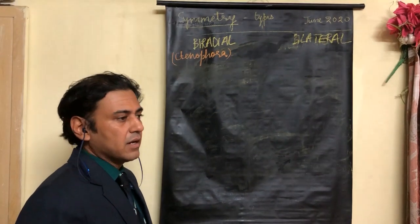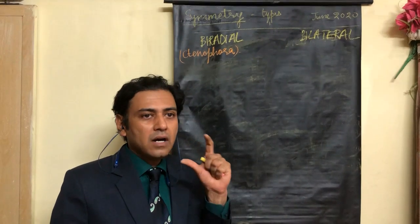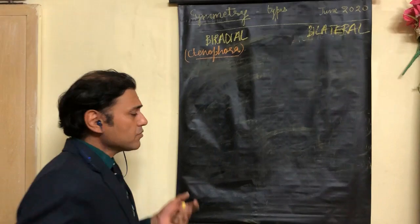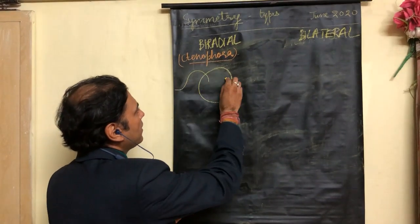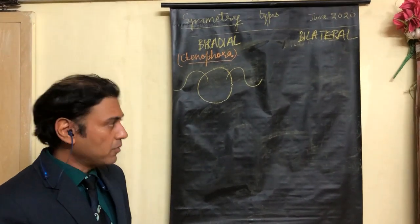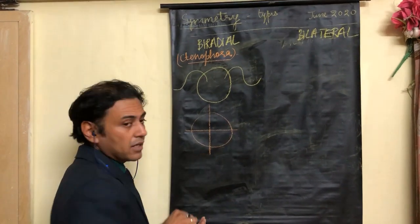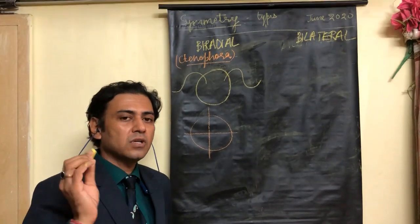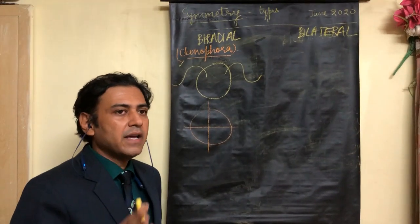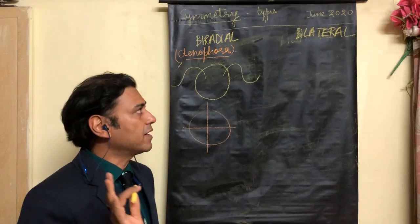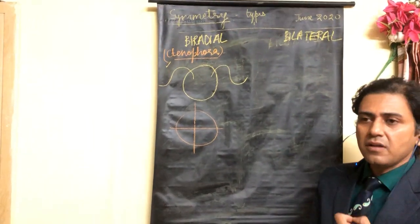The next type is biradial symmetry, which is just a type of radial symmetry. The organism is still umbrella-shaped. The example is Ctenophora — the comb jellies. Comb jellies look like two jellyfish with two long tentacles projecting from the body. The body can be divided into two equal parts by only two planes through the center. A third plane makes the division of tentacles or internal organs asymmetrical. Therefore Ctenophora shows biradial symmetry.